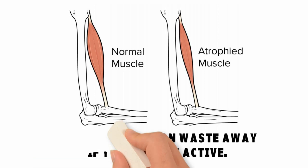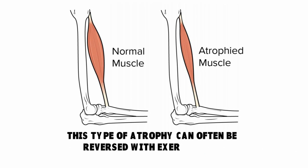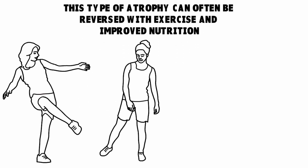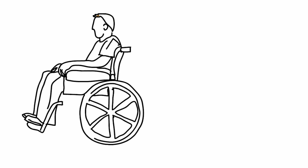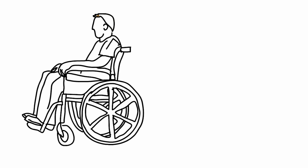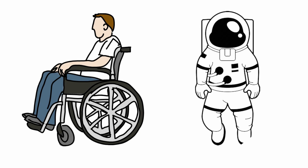After the atrophy kicks off, you can reverse this type of atrophy with exercise and improved nutrition — diet and exercise. Muscle atrophy can also happen if you've been bedridden or unable to move certain parts of the body due to a medical condition. Research has also shown that astronauts can experience muscle atrophy after just a few days of weightlessness. Only a few days — think about it.